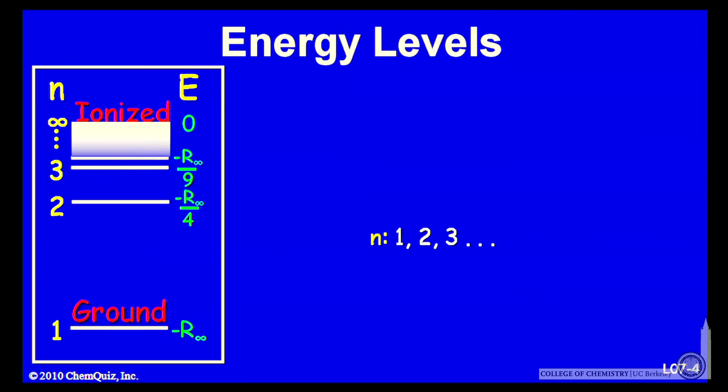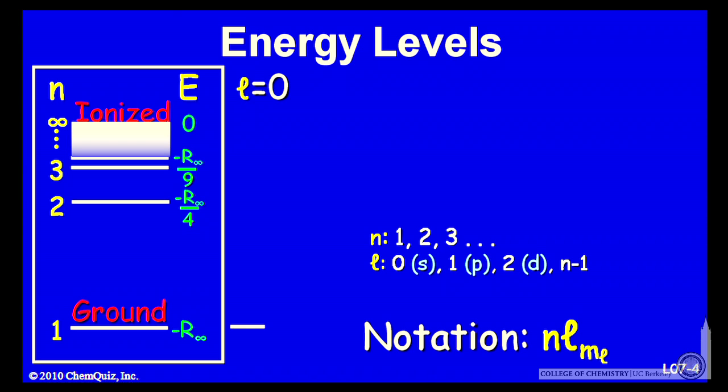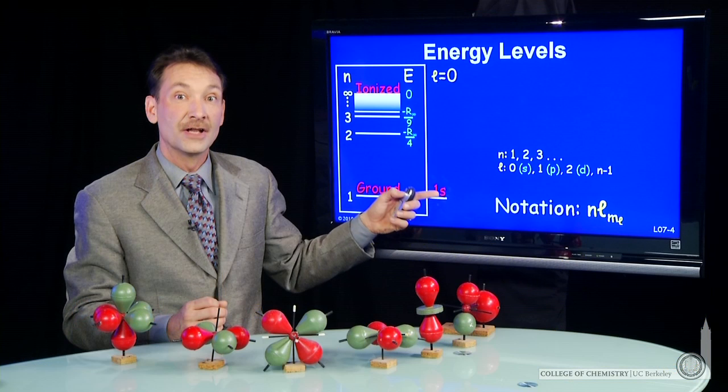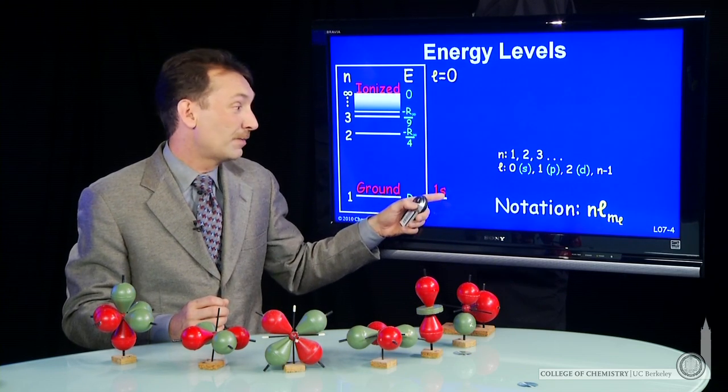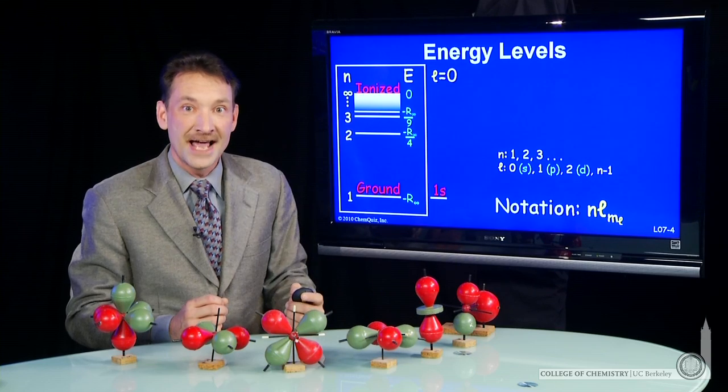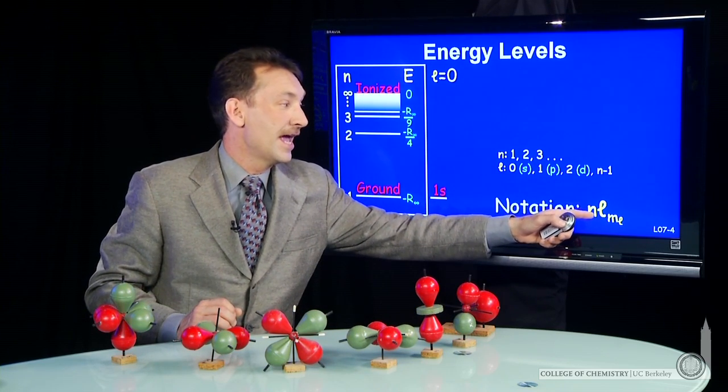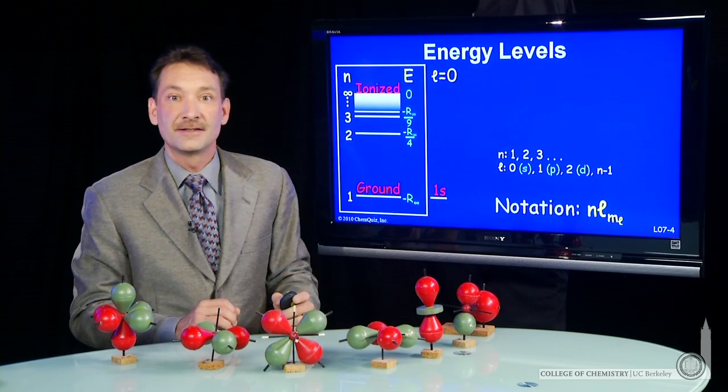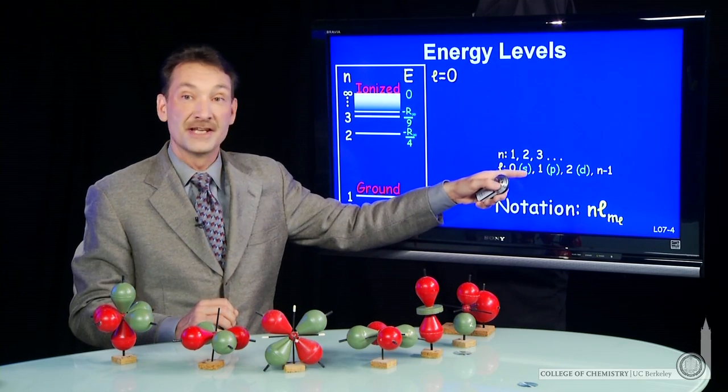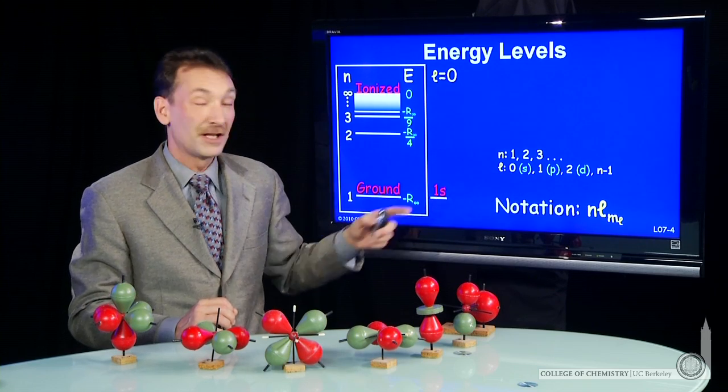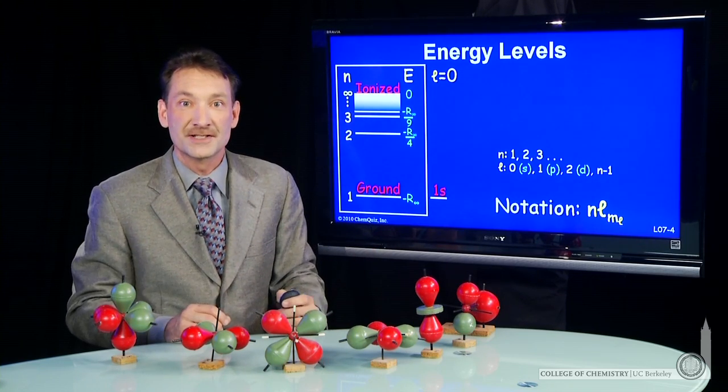What we're going to say is for n equal 1, there's several values of l, the angular momentum quantum number. For n equal 1, l can be 0. And that gives rise to what we call a 1s orbital. The lowest energy orbital about an atom is n equal 1, and the only possible value of l is s. We'll use the designation n l m sub l to label our orbitals. So this one, n equals 1, l equals 0, which is an s. And m sub l is also 0, and the only possibility is 0, so we just leave that off.